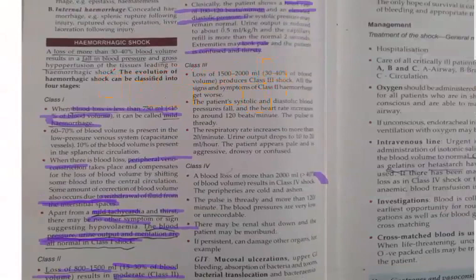Class 3 shock occurs when 30 to 40% of blood volume is lost. All the signs and symptoms of Class 2 shock worsen. The patient's systolic and diastolic blood pressure fall, heart rate increases to about 120 beats per minute, respiratory rate increases to more than 20 per minute, urine output drops to 10 to 20 ml per hour, and the patient appears pale, aggressive, drowsy, and confused.